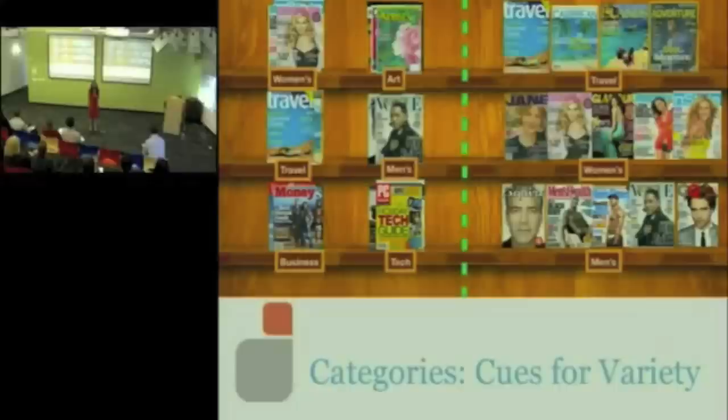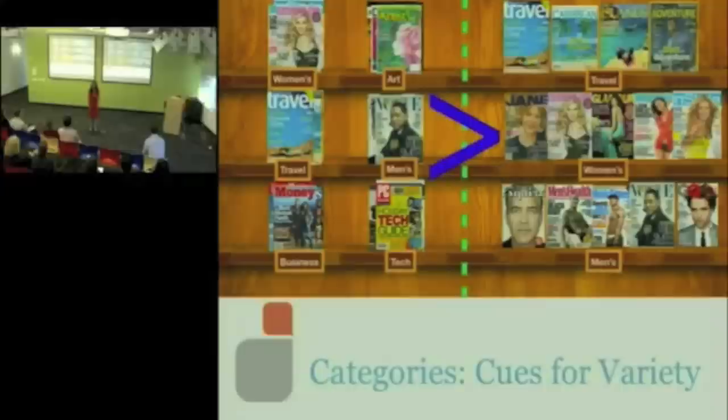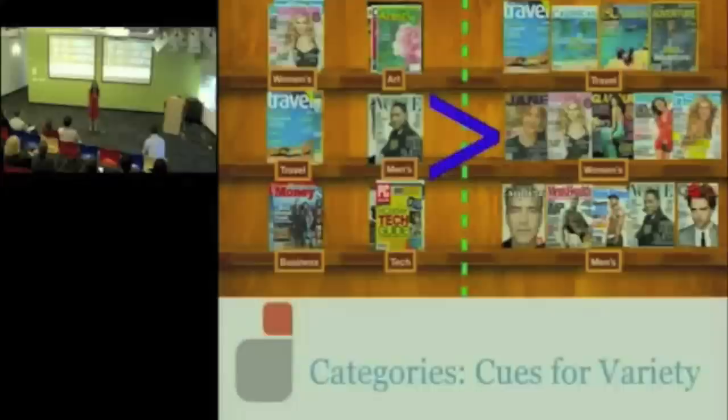What drove people's perception of how many choices they had, whether they were satisfied with the choices present, whether they were likely to buy was not number but how it was arranged. So if you take 400 magazines and you divide it up into 25 categories, and you take 600 magazines and you divide it up into 10 categories, people see the 400 is offering them more than the 600. Why? Because categories become the cue for variety. And we can handle more categories than we can handle choices.